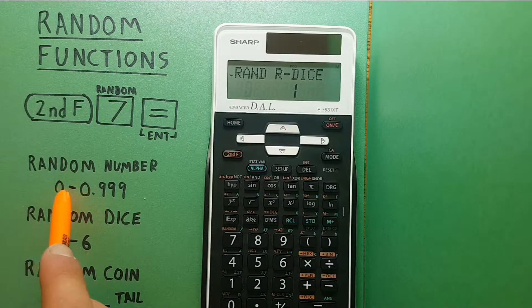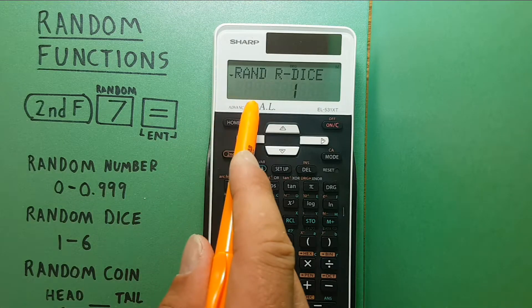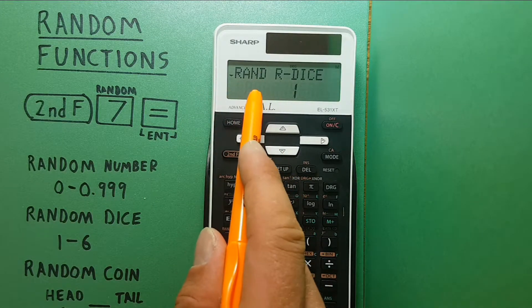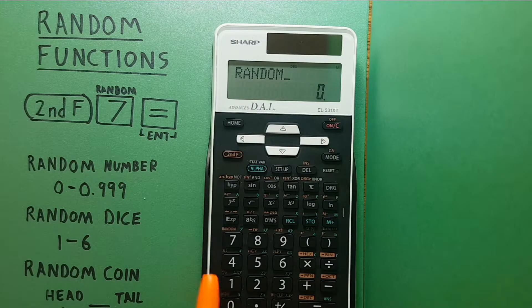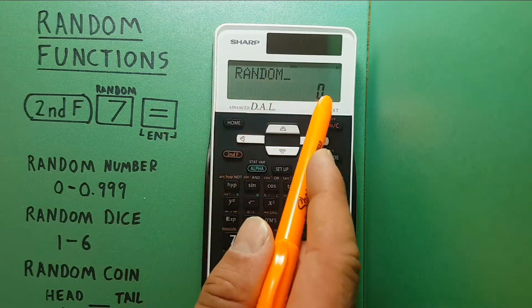To use the random number, we choose the first option that says rand zero there and we'll press equals to select it. We now get this screen that says random and has a zero here.